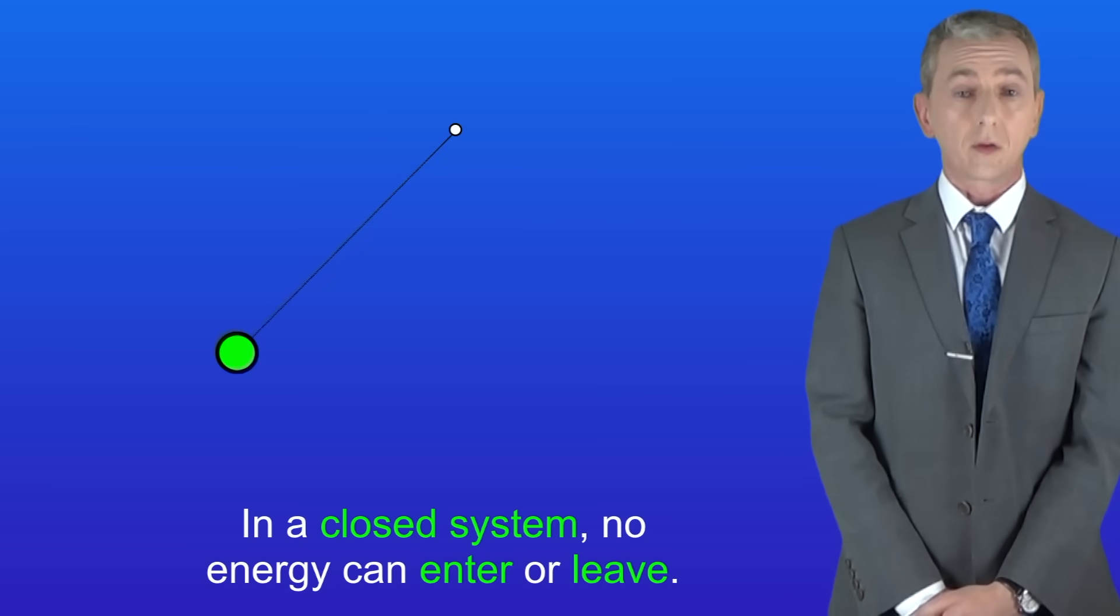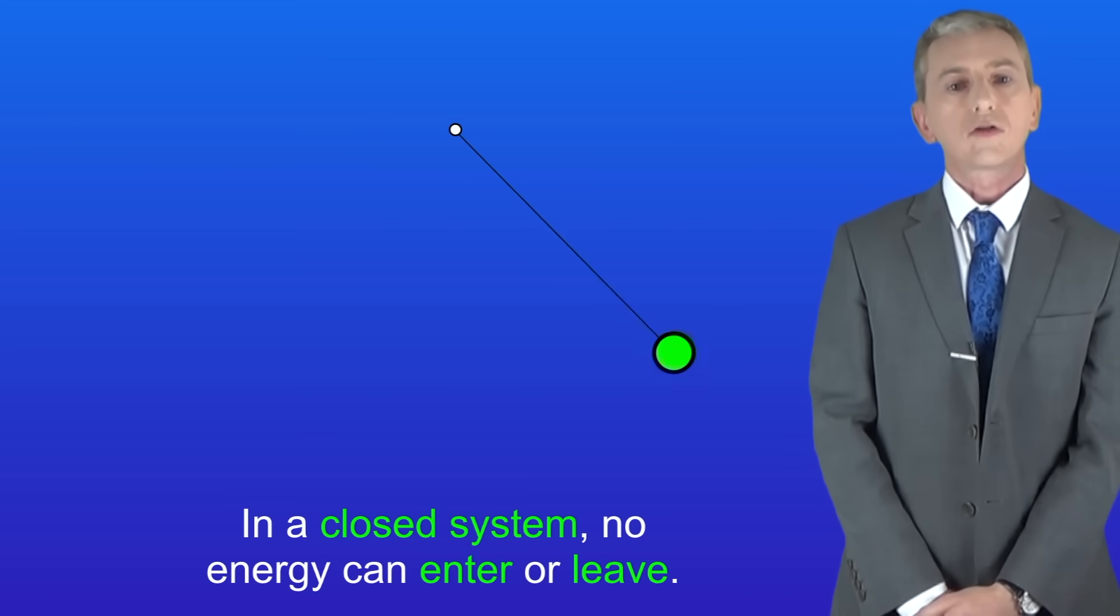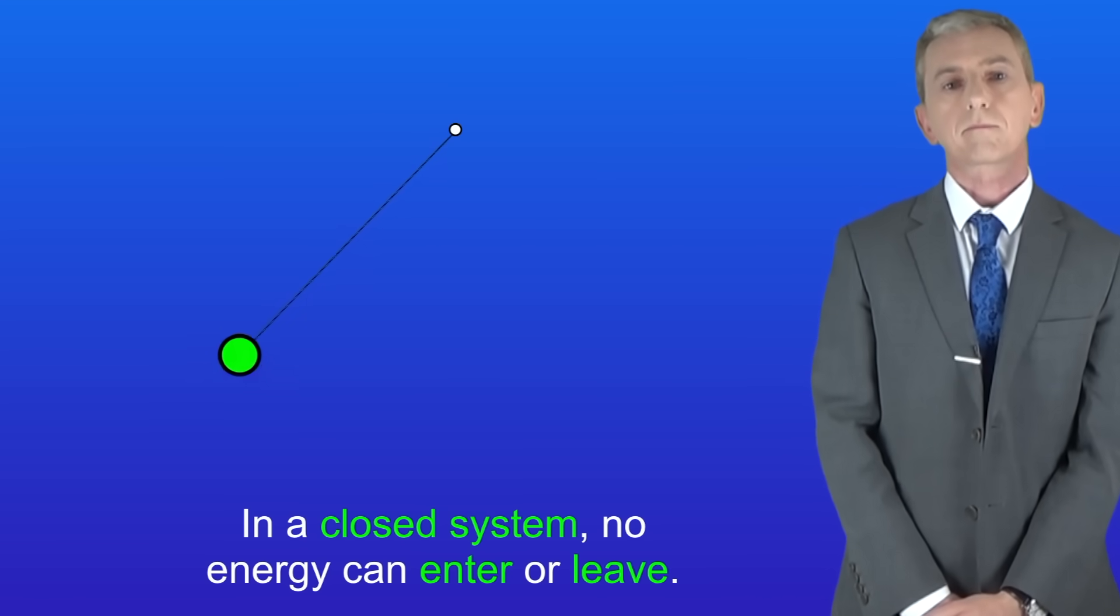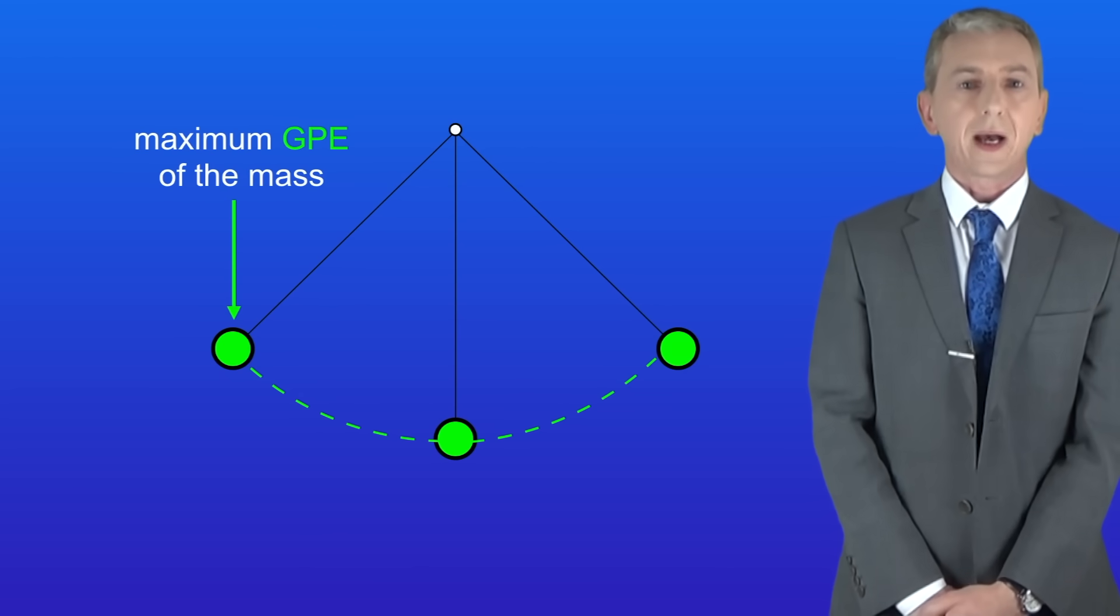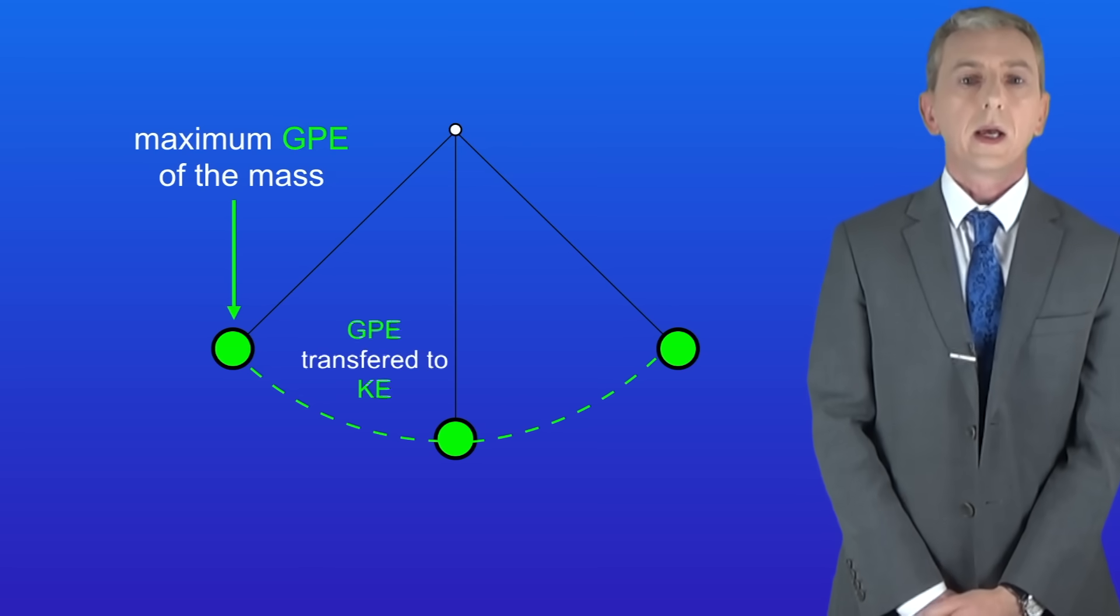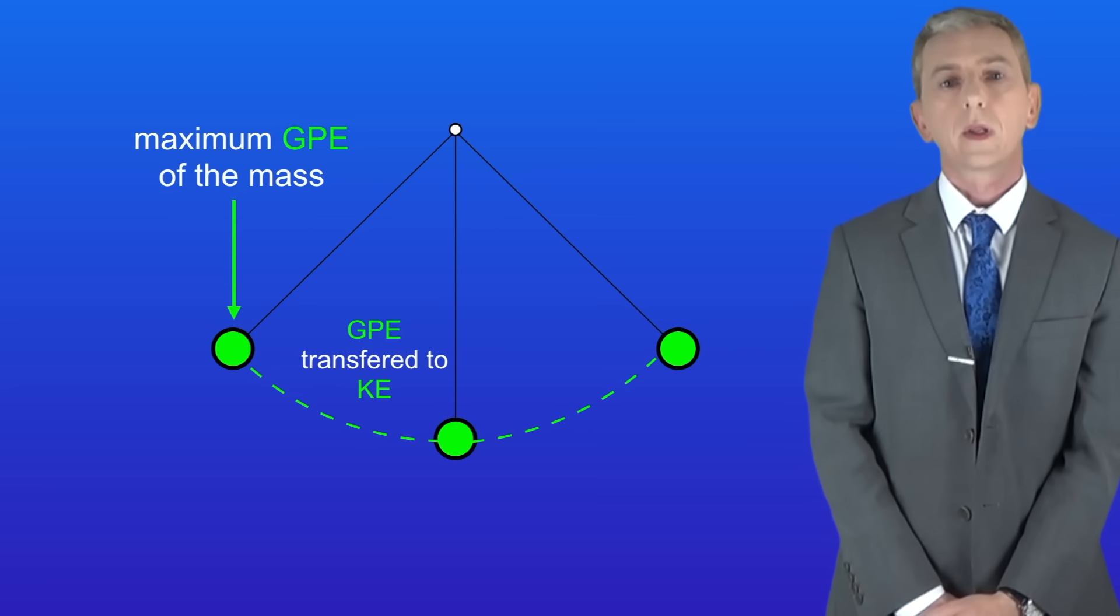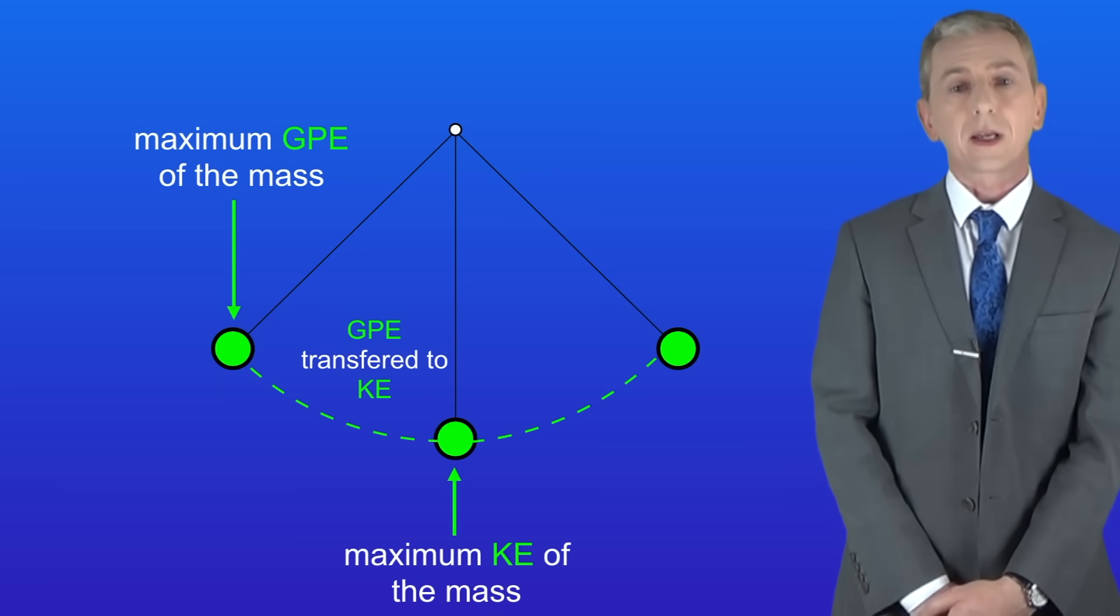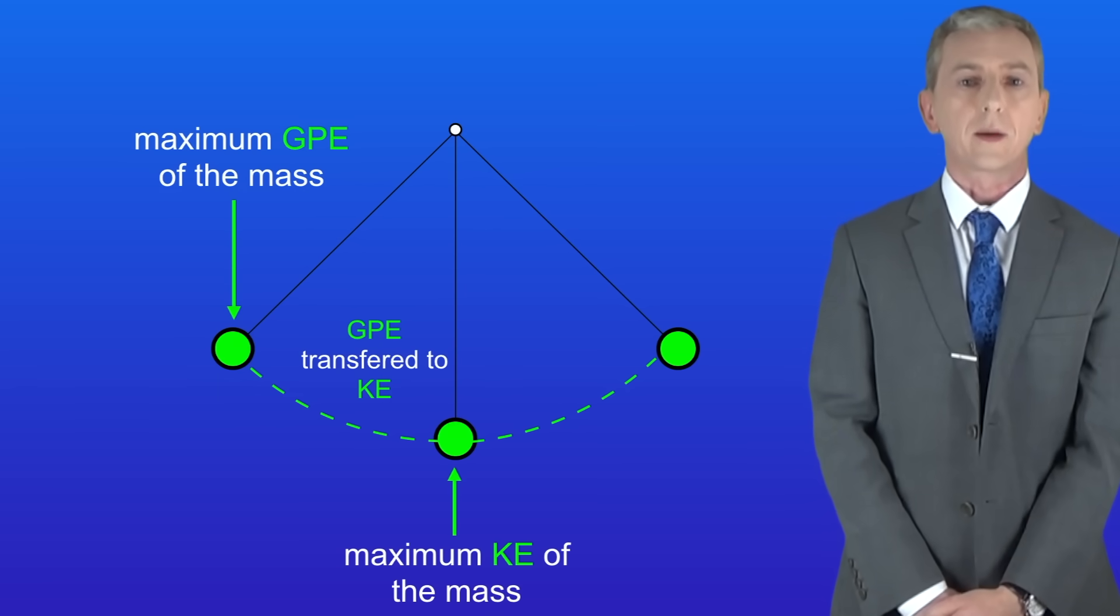So if we take a snapshot of the pendulum we can see the energy transfers more easily. At the top the mass has the maximum store of gravitational potential energy. As the pendulum swings this is transferred to the kinetic energy store. The mass has the maximum kinetic energy store at the bottom of the swing since that's where it's moving at the fastest speed.